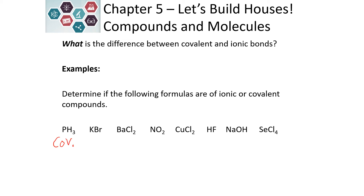For KBr: potassium is in the first column of the periodic table — it is a metal. Bromine is in group seven — it is a nonmetal. So we have a metal and a nonmetal, making this an ionic compound. Barium is in group two — a metal. Chlorine is in group seven — a nonmetal. So BaCl2 would also be ionic. Anytime we have a metal with a nonmetal, it's an ionic compound.